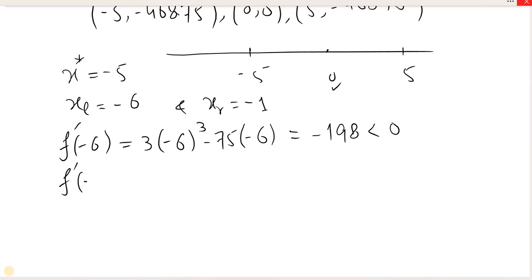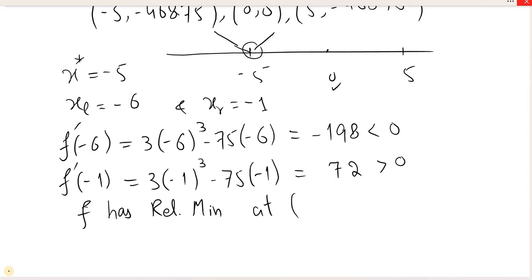So when we put minus 1 in the first derivative, where x was, we put minus 1, and we simplify it, which is 72, greater than 0. So this is left, and this is right. If we write down what is relative, it is relative minimum at which point? Minus 5, minus 468.75.